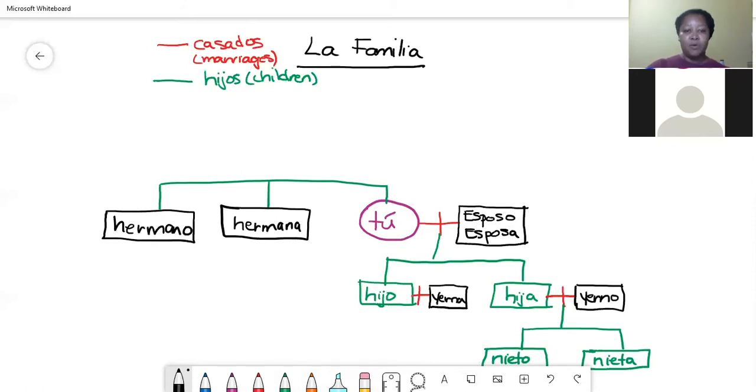Now your hermano married your cuñada. And if your hermana had gotten married, she would have married your cuñado. Now your hermano and your cuñada produced for you two beautiful sobrinos. And so you have your sobrino and your sobrina.